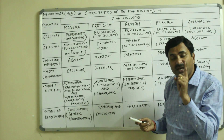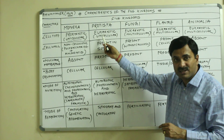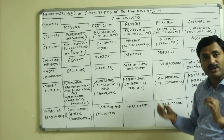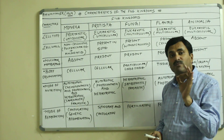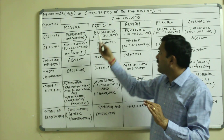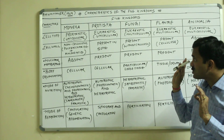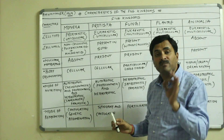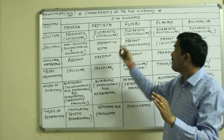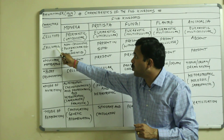Monera are prokaryotic as well as unicellular. Protista members are eukaryotic — they have the eukaryotic cell type but they are unicellular, meaning Protista are unicellular eukaryotic organisms. Fungi, Plantae, and Animalia kingdoms are eukaryotic and multicellular. So in Monera the cell type is prokaryotic, while in Protista, Fungi, Plantae, and Animalia the cell type is eukaryotic. Remember that in Protista the members are unicellular and eukaryotic; otherwise all other members are multicellular and eukaryotic.